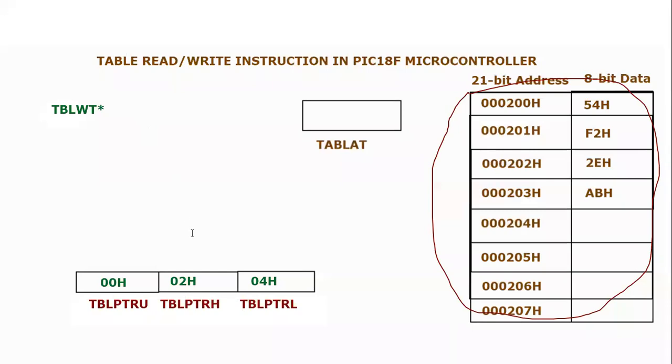If one is going to write the complete address of table pointer, or the complete address of the location which is pointed by table pointer, it is TBLPTR = 000204 hex, and this is this specific location.